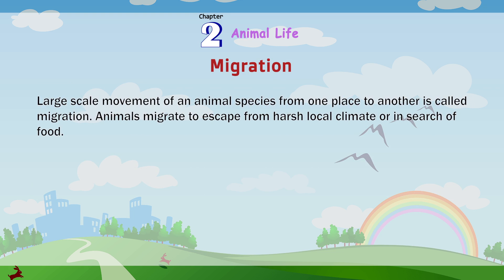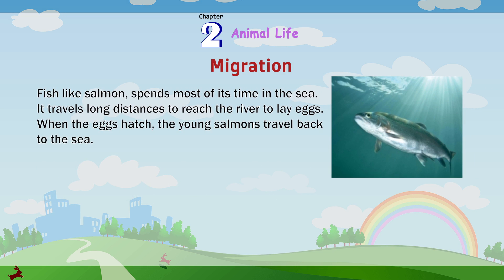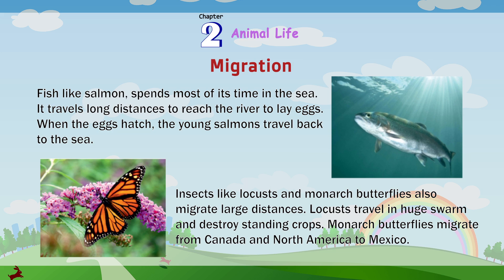Migration. Large-scale movement of an animal species from one place to another is called migration. Animals migrate to escape from harsh local climate or in search of food. Birds like the Arctic tern travel a very long distance of about 35,000 kilometers from the Arctic to Antarctica and back. Siberian cranes come to India every winter to breed. Fish like salmon spend most of their time in the sea and travel long distances to reach the river to lay eggs; when the eggs hatch, the young salmon travel back to the sea. Insects like locusts and monarch butterflies also migrate large distances — locusts travel in huge swarms and destroy standing crops, while monarch butterflies migrate from Canada and North America to Mexico.